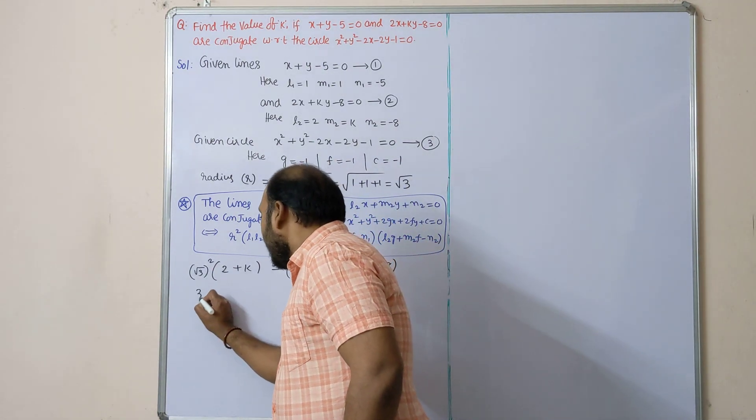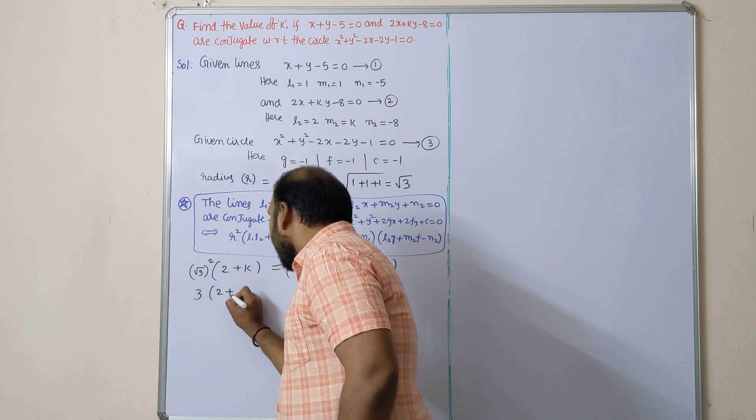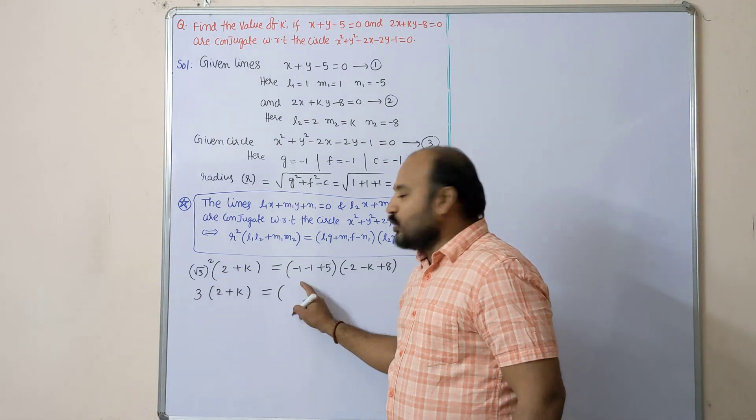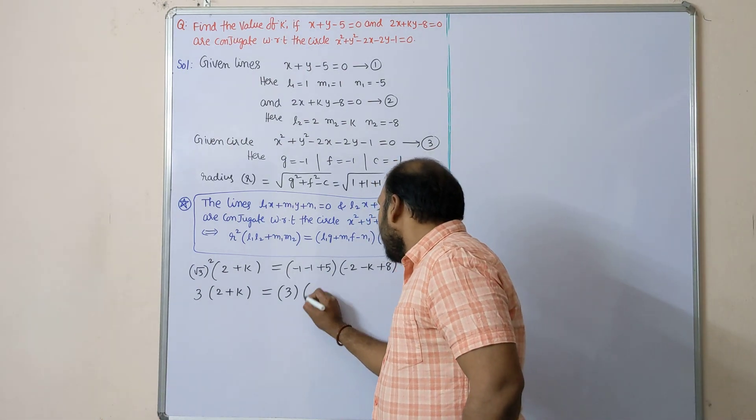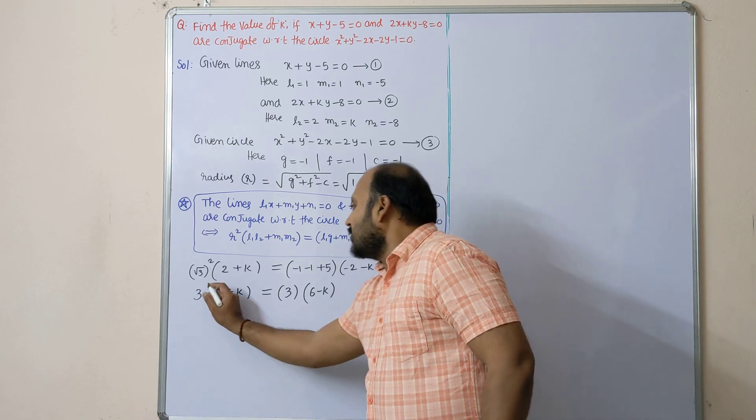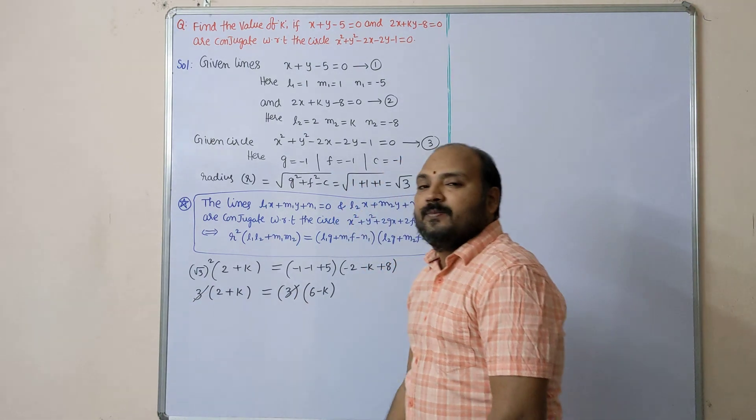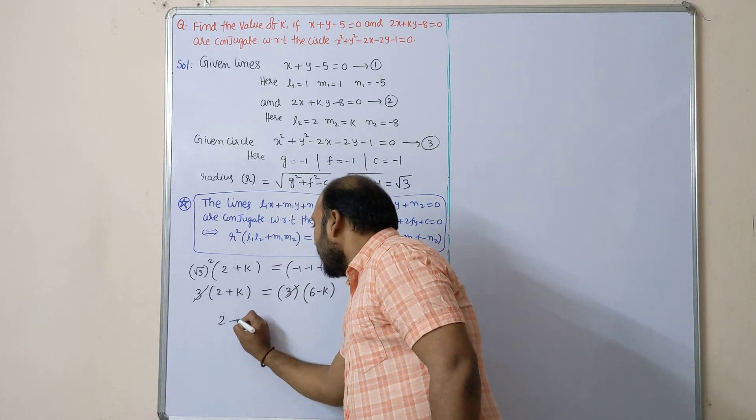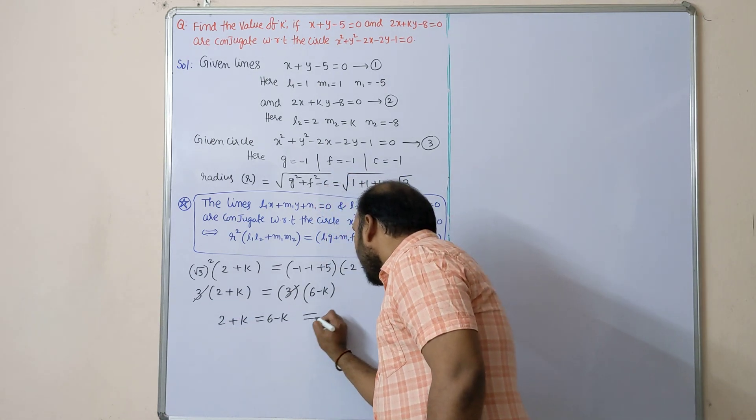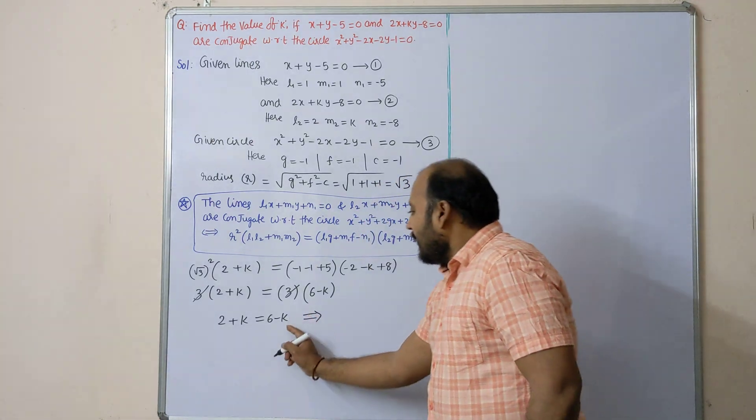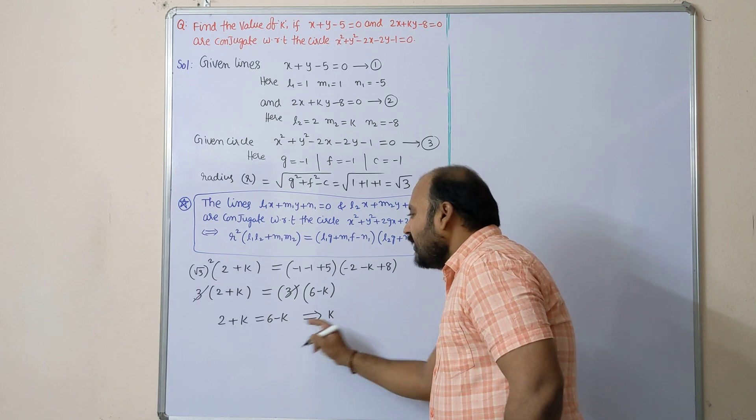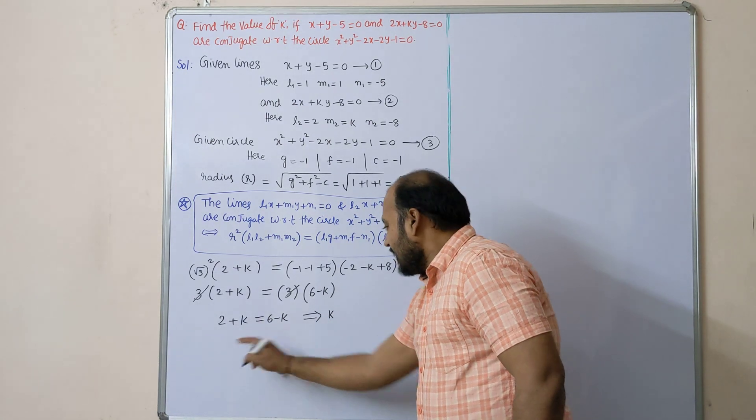So root 3 whole square is 3 into 2 + k = (5 - 2 = 3) into (8 - 2 = 6, so 6 - k). Both sides 3 gets cancelled, so 2 + k = 6 - k.